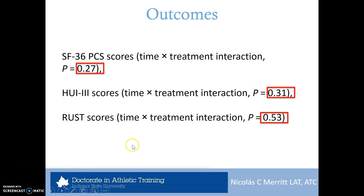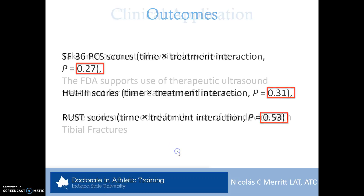In terms of outcomes, there was no significant difference between utilizing the sham versus the actual ultrasound unit for the main outcome measures. The SF-36 did not show a significant difference, nor did the HUI-3 or RUST scores. There was no significant difference in how patients felt or in radiographic evidence of healing, and even a placebo effect was not observed, which was very surprising.